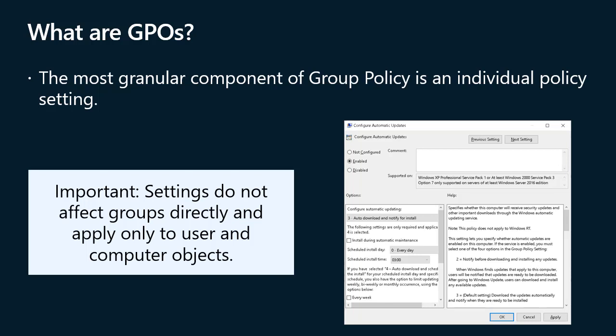When you enable or disable a policy setting, Windows Server makes a change to the configuration of users and computers to which the GPO is applied. To create a new GPO in a domain, in Group Policy Management, right-click the Group Policy Objects container and then select New. To modify the configuration settings in a GPO, right-click the GPO and then select Edit. This opens the Group Policy Management Editor snap-in, which displays all policy settings in an organized hierarchy beginning with the division between computer settings and user settings.